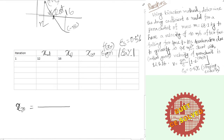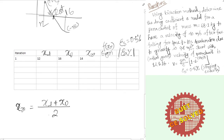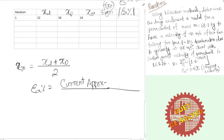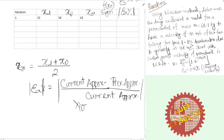For the first iteration, xR equals (12 plus 16) divided by 2, which gives xR equals 14. For the error in the first iteration, there is no previous approximation available, so we cannot compute the percent relative approximate error. The formula is: absolute value of (current approximation minus previous approximation) divided by current approximation, multiplied by 100 percent.